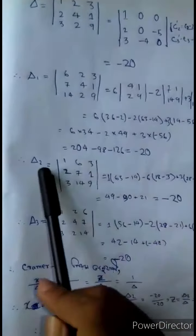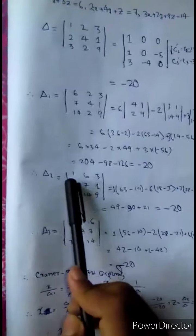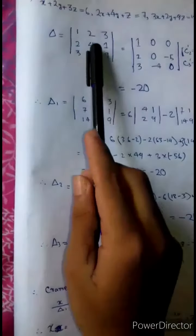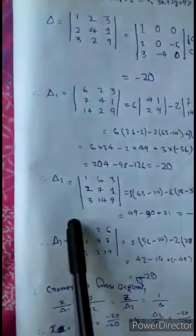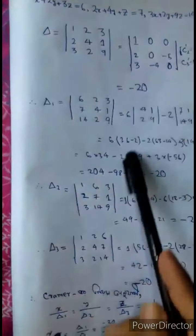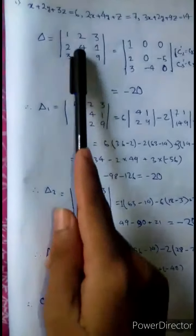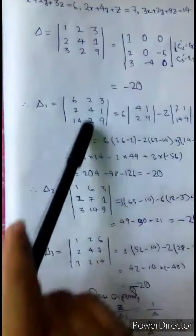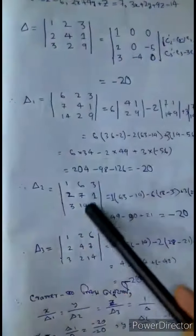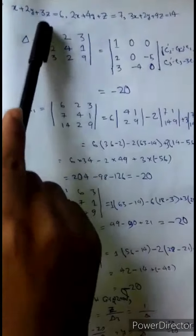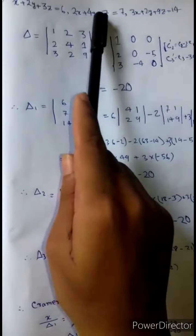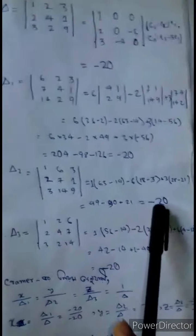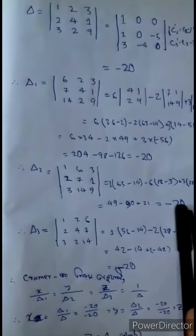For this column: 1, x which is 1, 2x which is 2, 3x which is 3. This column is 6, 7, 14. This column is 3z which is 3, z is 1, 9z is 9. This determinant equals minus 20.